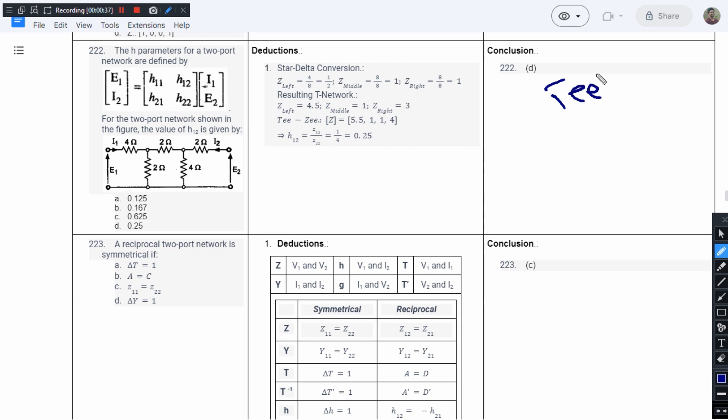I know if I have been given a T network, I can solve it using Z parameters. If I have been given a pi network, I can solve it using Y parameters. But in order to do the analysis in Y domain, if the parameters are inherently admittances, it would be easy.